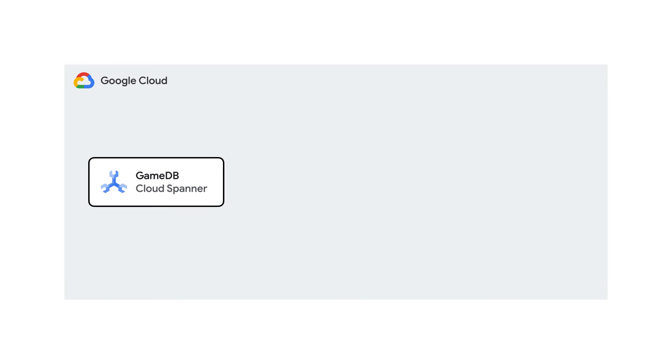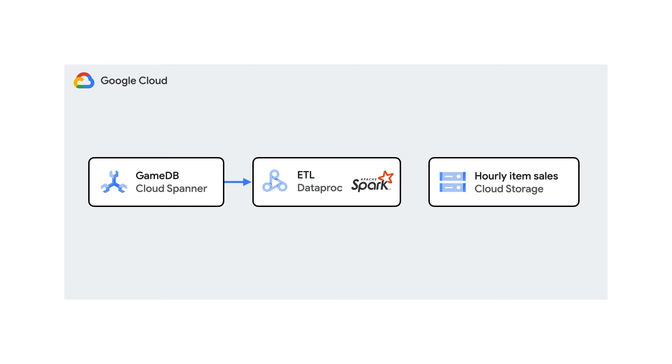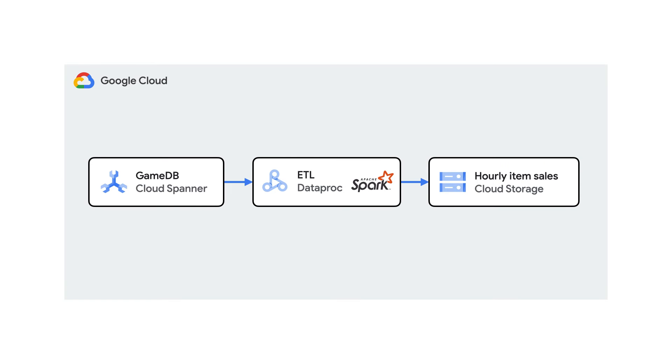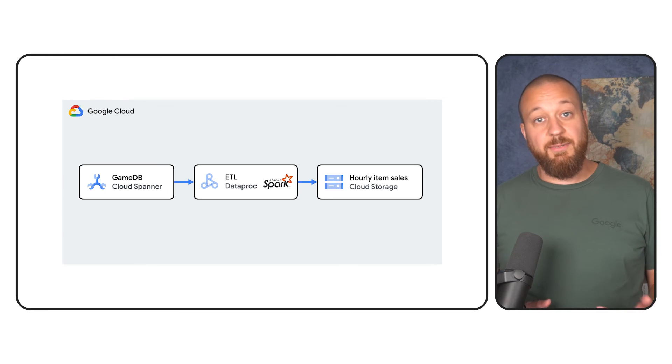BigQuery federated queries are not the only way to use Data Boost. Data Boost can be used with any Spanner client connector, so you can use Data Boost in your ETL pipelines that leverage Dataflow, Dataproc, or other custom applications. In another example, my data engineer set up an ETL process to anonymize player information and export hourly batches of item sales to share with third-party partners using Dataproc and GCS. With Data Boost, this ETL process no longer consumes the Spanner instance's CPU, leaving that capacity for normal operational workloads.